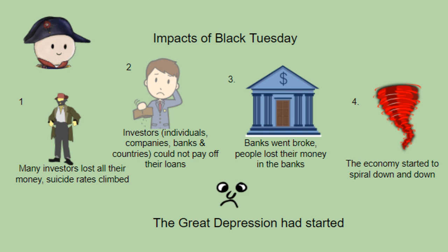Black Tuesday shook the American nation and the world. To begin with, many investors lost all of their money; unable to face their family and friends, many chose to commit suicide. Since they lost their money, they could not pay back their loans, the banks went broke, and anyone who kept their money in those banks lost everything. With so many people losing all their money, the amount of goods and services purchased fell. The economy started its downward spiral — the Great Depression had started. It would take almost a decade, massive changes in society, and a world war to finally bring the Great Depression to an end.